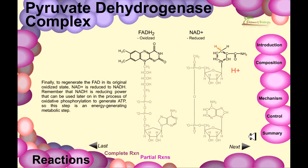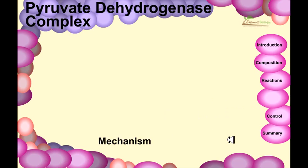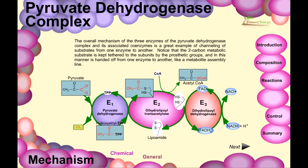NAD is reduced into NADH and can be further taken up. These are the overall processes of three enzymes of the pyruvate dehydrogenase complex and its associated coenzymes. It is a great complex involving channeling of substrates from one enzyme to another — the product of one enzyme becomes the substrate for the next. The two-carbon metabolic substance is kept tethered to the subunit by prosthetic groups and handed off from one enzyme to another like a metabolite assembly line.